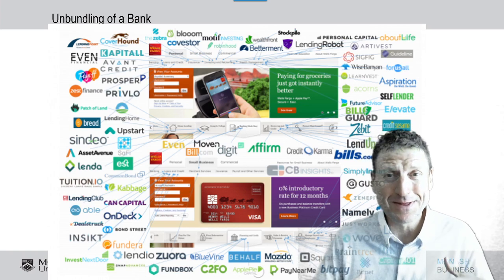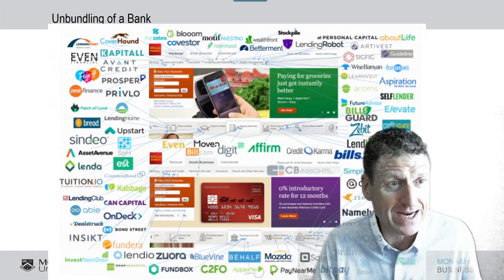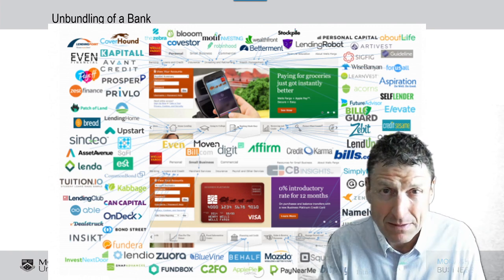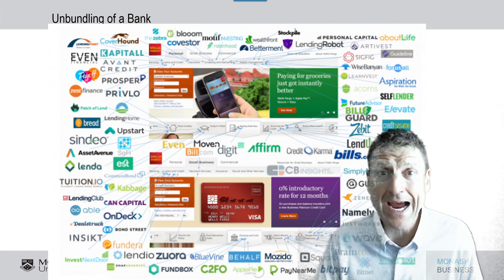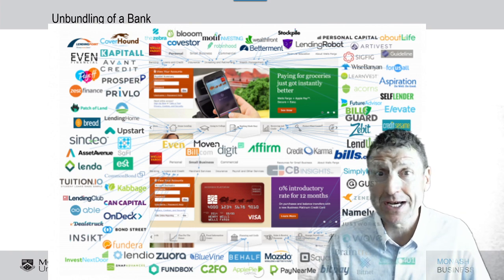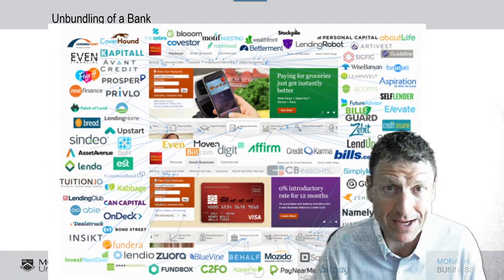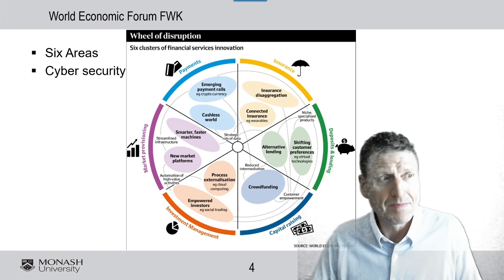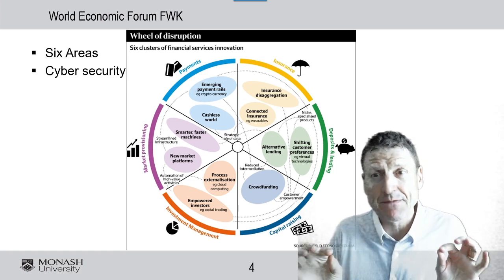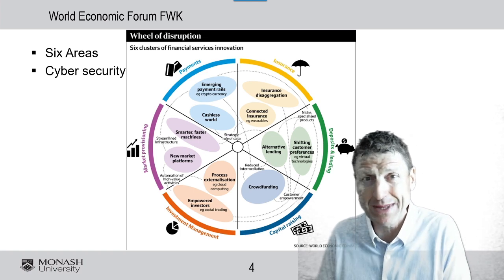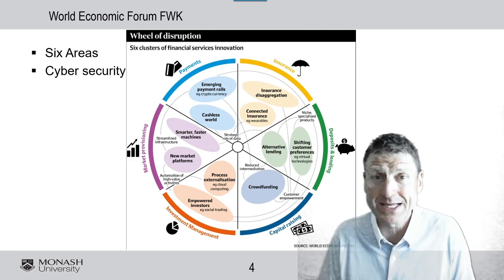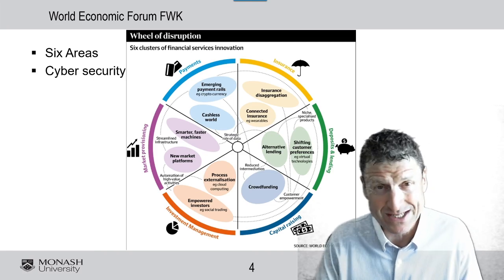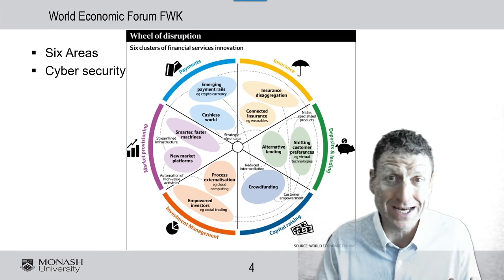Look at all of the startups around the world — these are all the startups in the US that are picking away at the low-hanging fruit, meaning the different services that banks should be providing at a much greater value to customers but are not, so startups are coming in and taking away those services. Even in Europe the same things are happening. This semester we are going to cover six areas of the World Economic Forum framework, plus one week of cybersecurity, which is very important, even though it's not directly noted in the World Economic Framework.